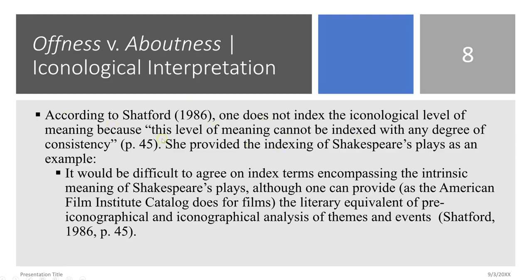Regarding ofness and aboutness — if anybody wants the article by Sarah Shatford Lane, just let me know and I'll send it to you. She did her doctoral study on the ofness and aboutness of information objects, specifically an inter-indexing consistency study. I also did an inter-indexing consistency study for my dissertation at christineangel.org about the ability to index what an object is of, what it's made of, what it was used for, and the aboutness of the object. The inter-indexing consistency study represents how inconsistent we as human beings are when describing what an object is of or about, especially at the iconological level of interpretation, because we all have different viewpoints on what a museum object could possibly mean.